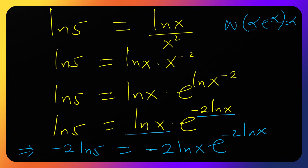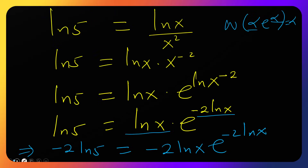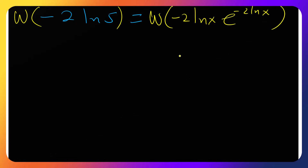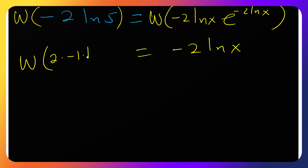Now we can simplify and apply the W function. Since the left side equals the right side in the form alpha·e^alpha, we can take the W function of both sides. The W function of minus 2 ln x times e raised to minus 2 ln x equals minus 2 ln x. So W of minus 2 ln 5 equals minus 2 ln x.